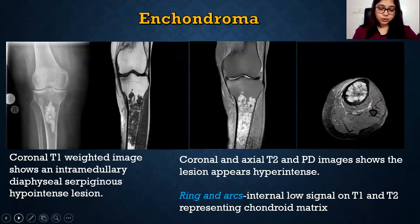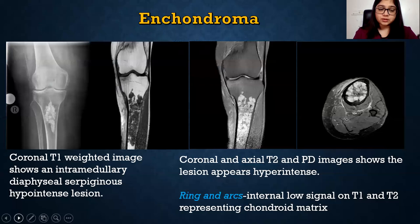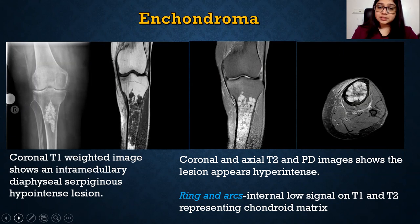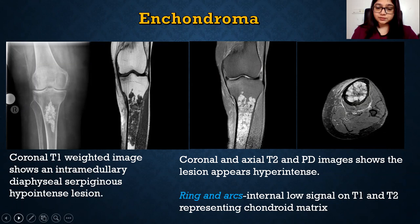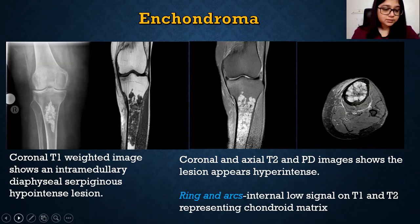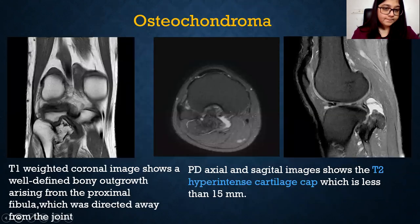Enchondroma: it was an incidental finding. Coronal T1 images showed an intramedullary diaphyseal lesion that was hypointense. Coronal and axial T2 and PD-weighted images showed it appeared hyperintense. A NAS-type classification, which appears as internal low signal on T1 and T2, was seen, representing chondroid matrix — consistent with osteochondroma/enchondroma.